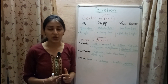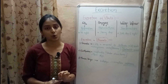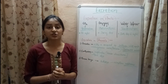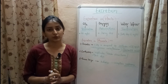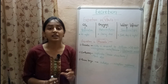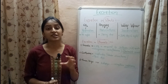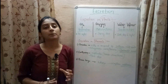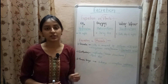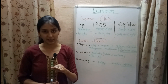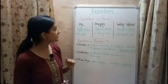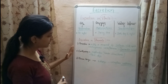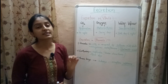Besides respiration, photosynthesis, and transpiration, there are various other mechanisms by which plants excrete waste products. For example, some waste products are stored in the leaves and fruits, and by falling of fruits and shedding of leaves, waste products are excreted from the plant body. Plants also excrete waste products into the soil present around them. This is how excretion occurs in plants.